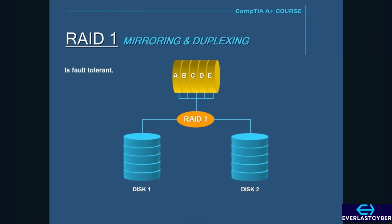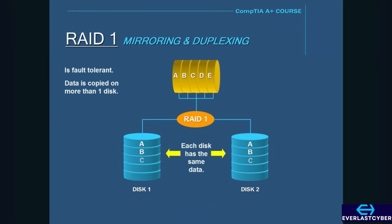RAID 1 is fault tolerant. In a RAID 1 setup, the data is copied on more than one disk. So disk 2 would have the exact same copy of the data as disk 1. In the event of a single disk failure, no data loss would happen, because the other disk would have a duplicate copy.